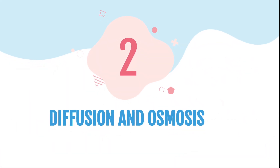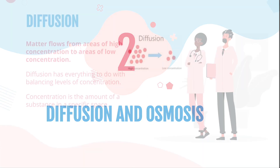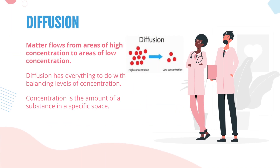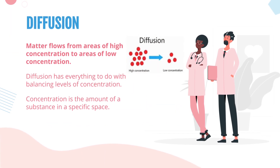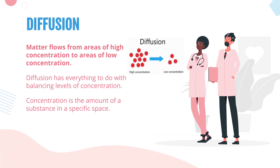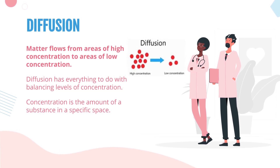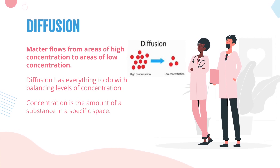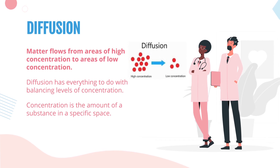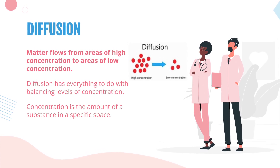Diffusion and Osmosis. Diffusion: matter flows from areas of high concentration to areas of low concentration. Diffusion has everything to do with balancing levels of concentration. Concentration is the amount of substance in a specific space.